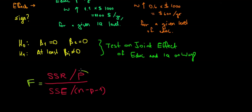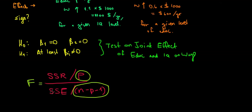The reason we divide by the number of parameters and by that denominator term is to standardize the sum of squared differences. The explained and unexplained sums of squares come from two different sources of variation, so we must normalize them by their respective degrees of freedom. The explained variation is standardized by P, and the unexplained variation is standardized by n minus P minus one.